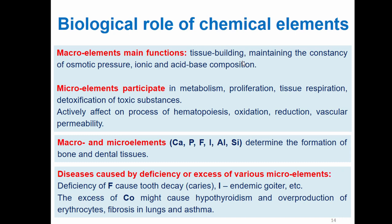Biological role of chemical elements: macroelements' main functions are tissue building; they maintain the constant of osmotic pressure in the body, ionic and acid-base composition. Microelements participate in metabolism, proliferation, tissue respiration, and detoxification of toxic substances. They also actively affect the process of hematopoiesis, oxidation, reduction, and vascular permeability. Macro and micro elements determine the formation of bone and dental tissues. When we have excess or deficiency of certain elements, we may have some diseases — for example, deficiency of fluorine causes tooth decay, deficiency of iodine causes endemic goiter. Even excess of elements causes illness; for example, excess of cobalt might cause hypothyroidism, overproduction of erythrocytes, fibrosis in lungs, and asthma.